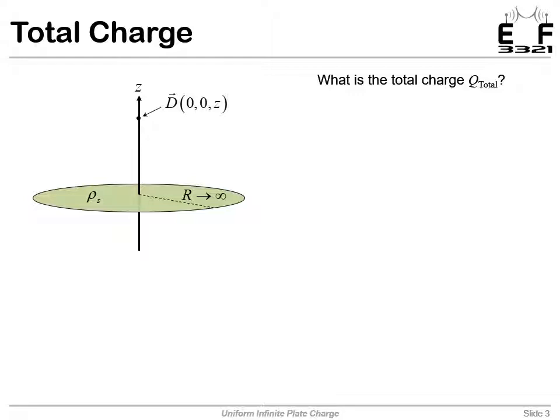Now for the infinite plate, the radius is infinite and the area becomes infinite. So what is the total charge? Well, the total charge was rho s times S. However, our area is now infinite because the radius has gone out to infinity. So a uniform charge density times infinite area gives us infinite charge, and that is the answer.